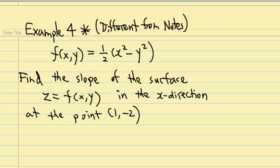This is example 4 star. This example may be different from your notes. We are given f of xy equal to half times x squared minus y squared. Find the slope of the surface z equal to f of xy in the x direction at the point 1, negative 2.